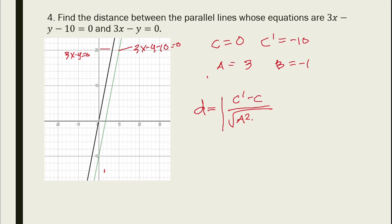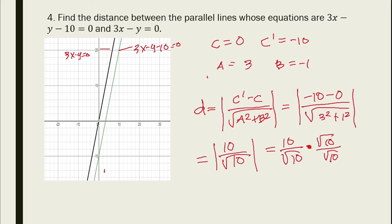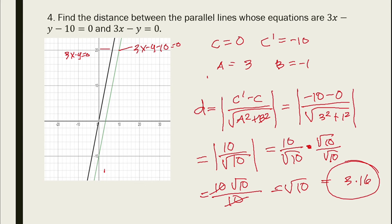Using the parallel lines formula: d = |c' - c| / √(a² + b²) = |-10 - 0| / √(3² + (-1)²) = 10 / √(9 + 1) = 10 / √10. Rationalizing: 10√10 / 10 = √10 ≈ 3.16. This is the shortest perpendicular distance between the parallel lines.